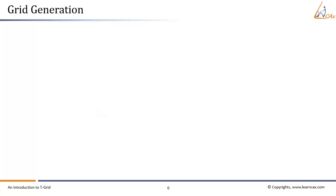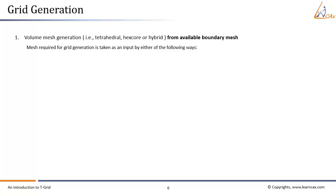The following techniques of grid generation are possible in T-Grid. First, volume mesh generation from available boundary mesh, where volume mesh refers to tetrahedral, hex core, or hybrid mesh. This boundary mesh can be imported in two ways. The .msh format: boundary meshes created by Gambit or ICEM-CFD can be imported in T-Grid in .msh format. Importing multiple files and appending multiple external files is possible at the same time. If the mesh is contained in two or more separate files, you can read them together in T-Grid and assemble the complete mesh.